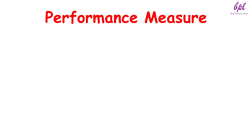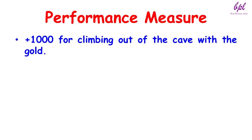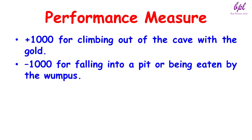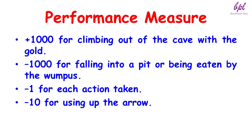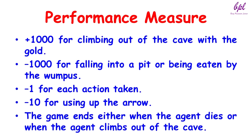Performance measure: plus 1000 for climbing out of the cave with the gold, minus 1000 for falling into a pit or being eaten by the Wumpus, minus 1 for each action taken, minus 10 for using up the arrow. The game ends either when the agent dies or when the agent climbs out of the cave.